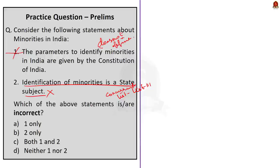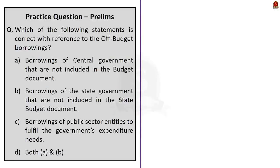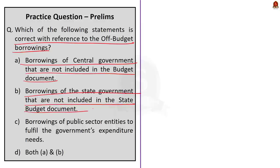And here, the question asks for the incorrect statements. So, the correct answer is option C, both 1 and 2. Now, let us take up this next question. Which of the following statements is correct with reference to the off-budget borrowings? Statement A, borrowings of central government that are not included in the budget document. Next statement, borrowings of the state government that are not included in the state budget document. Option C, borrowings of public sector entities to fulfill the government's expenditure needs. Option D, both A and B. And from our discussion, we can easily say that the correct answer is option C, borrowings of public sector entities to fulfill the government's expenditure needs.